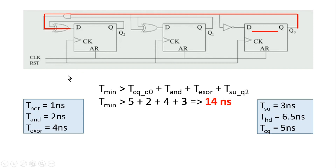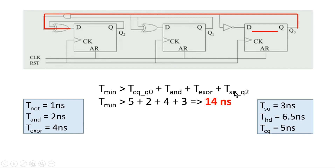Let us find the minimum time period of operation for this design. T_minimum must be greater than tcq of the first flop, plus the delay of the AND gate, plus the delay of the XOR gate, plus the setup time of the last flip-flop. The values are: tcq = 5 nanoseconds, AND gate delay = 2 nanoseconds, XOR gate delay = 4 nanoseconds.